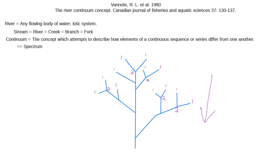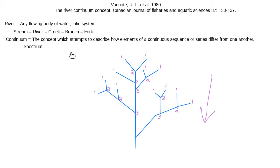Remember, you have to have equal magnitude streams in order for the stream order to change. Where a second order stream meets another second order stream, we get a third order stream. And where a third order stream meets a second order stream, it remains third order. But where a third order stream meets another third order stream, we get a fourth order stream.